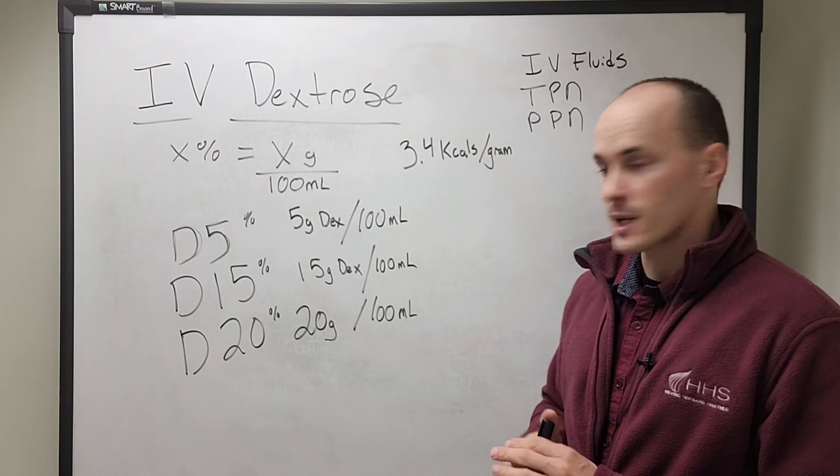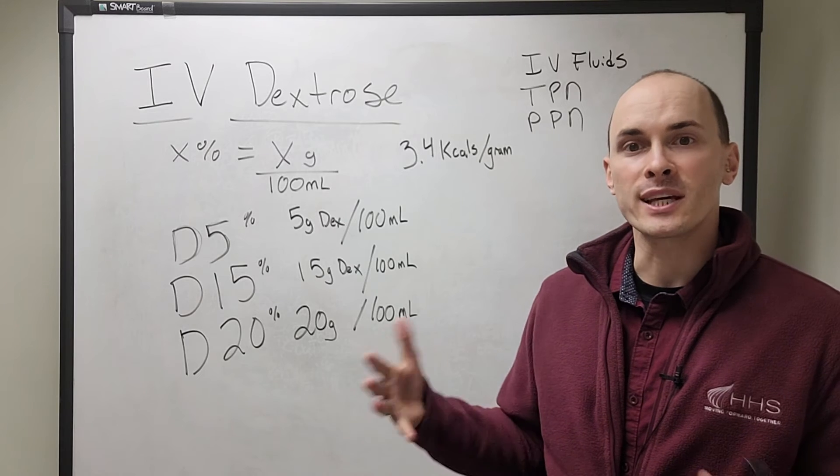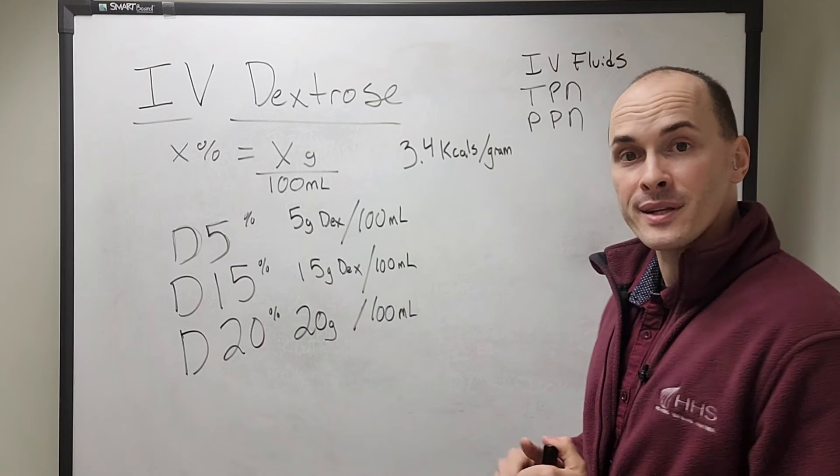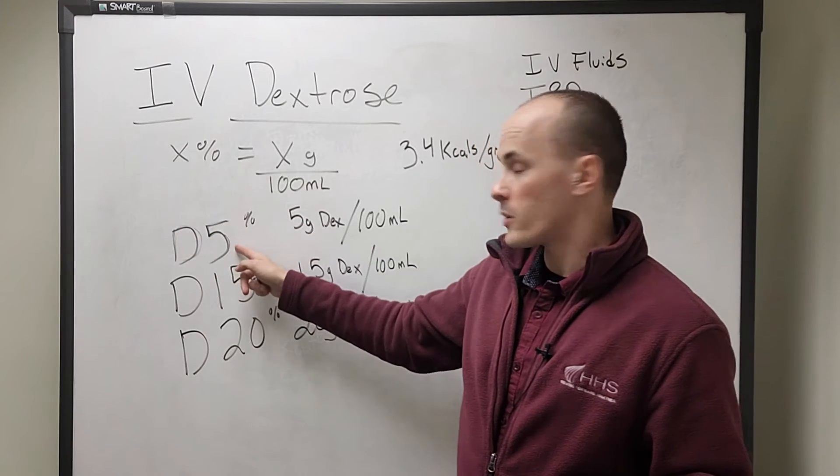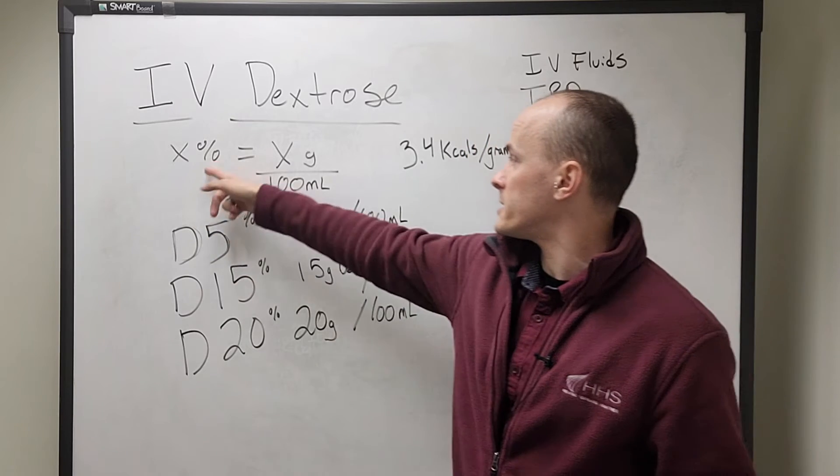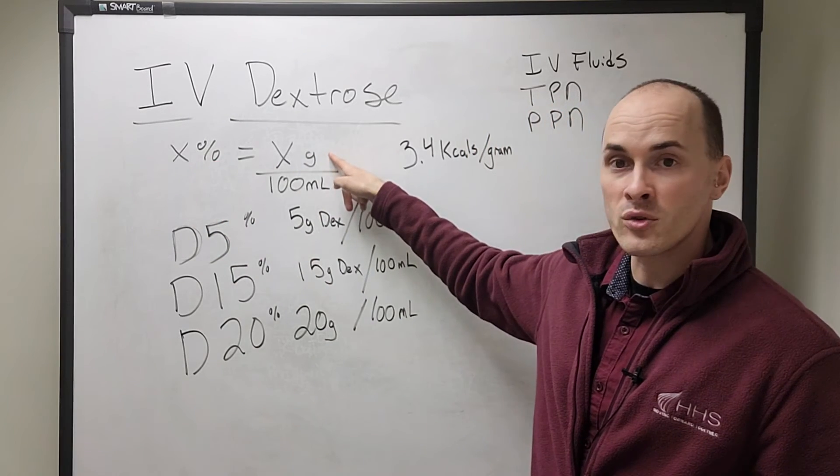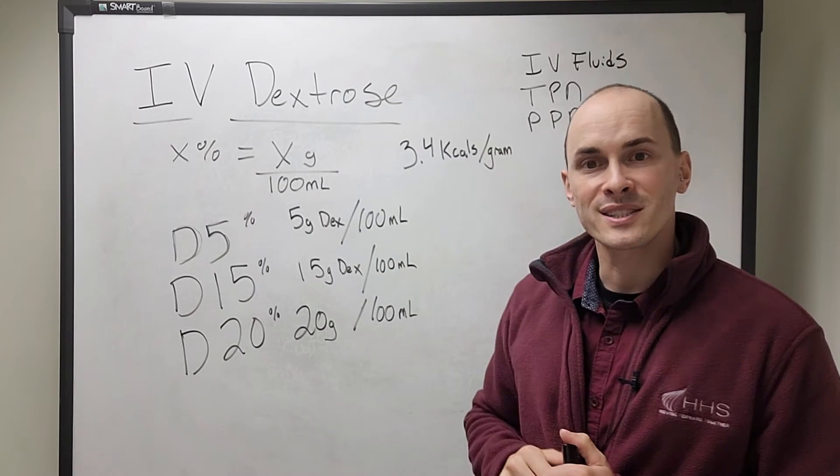So let's clean up the board a little bit and do an example equation. But before we get into the example, please write this down: whatever number is after the D is that number of grams per 100 mils. So let's go to an example.